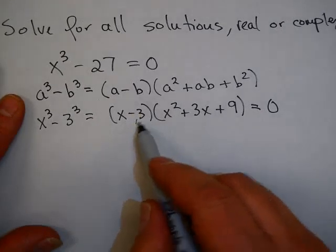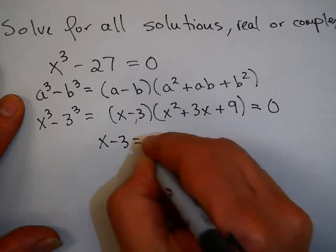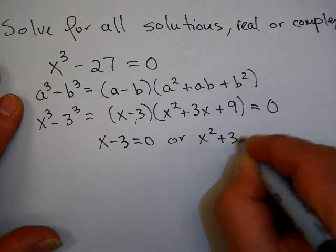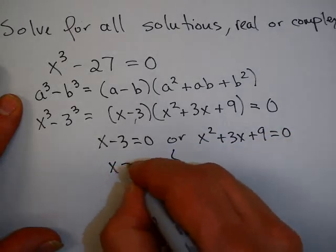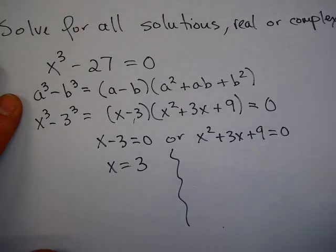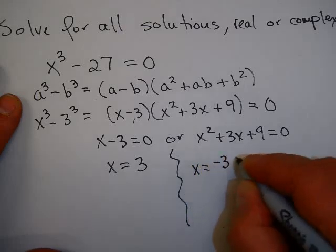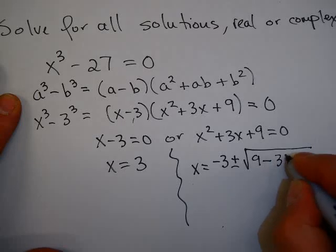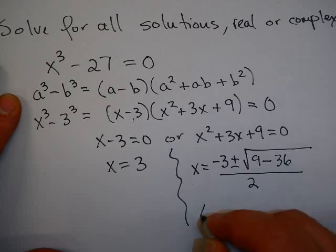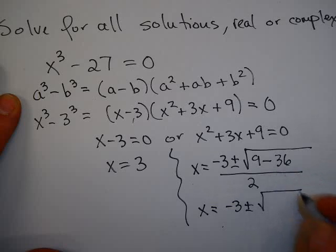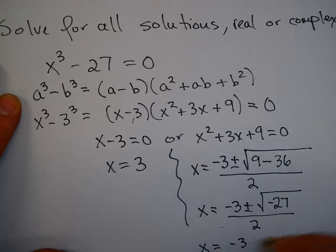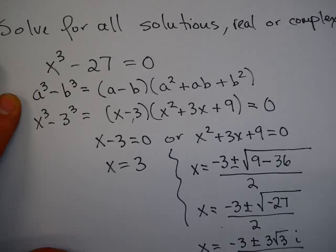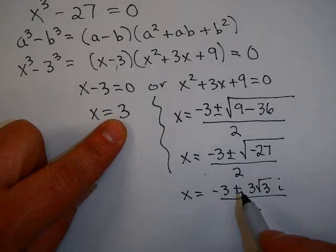In our case, x³ − 3³ = (x − 3)(x² + 3x + 9) = 0. By the zero product property, either x − 3 = 0, giving x = 3, or x² + 3x + 9 = 0. Using the quadratic formula on the second factor: x = (−3 ± √(9 − 36)) / 2 = (−3 ± √(−27)) / 2 = (−3 ± 3√3·i) / 2. So this equation has one real solution and two complex conjugate solutions.